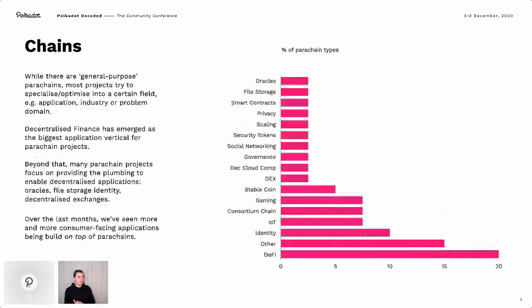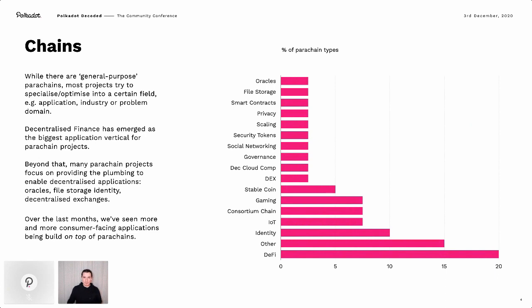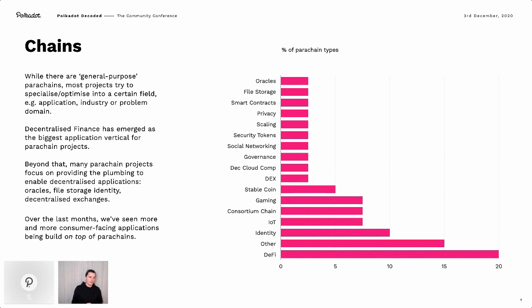This is a different angle of the same data — we're looking at all of the parachain teams, but instead of just looking at sheer numbers, we're looking at what are these teams actually doing, what are they actually building? A very high-level trend you can see is that while you can build general-purpose stuff on Substrate, it really shines when you're specializing and optimizing for something particularly. Rob touched on this already: there are three big things people are optimizing for — very specific applications, specific industries, or specific problem domains. And no surprise, DeFi — decentralized finance — is the biggest application vertical in the Polkadot ecosystem, reflecting what we're seeing across the broader blockchain space.